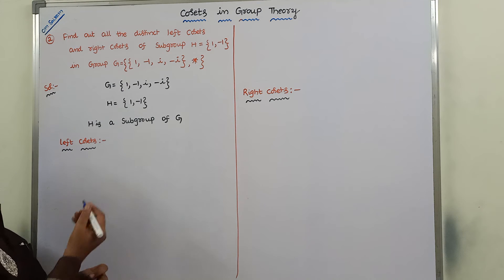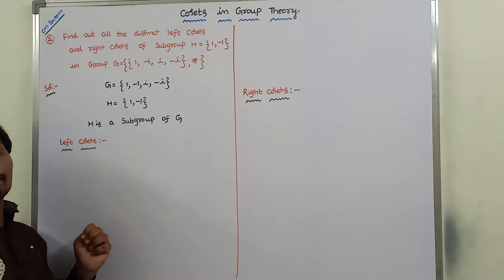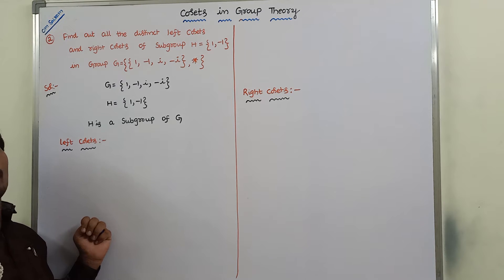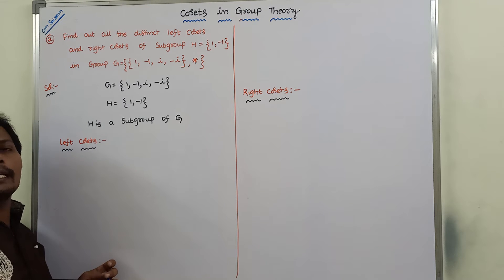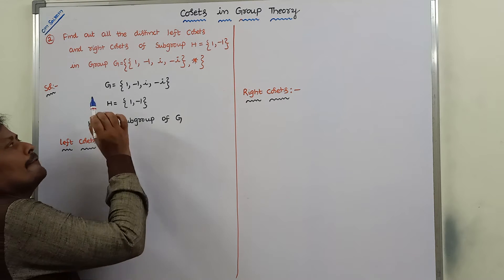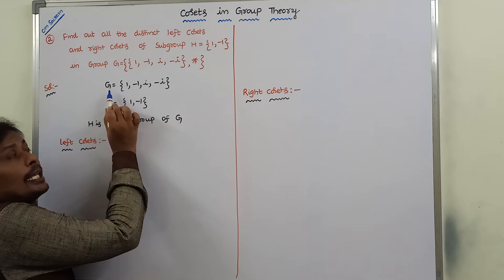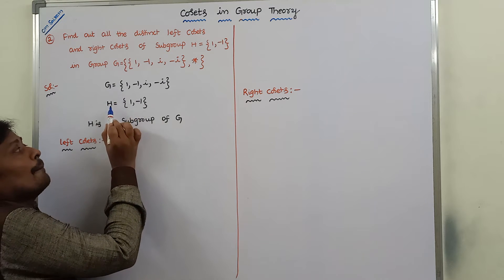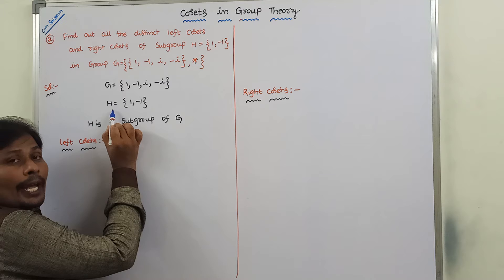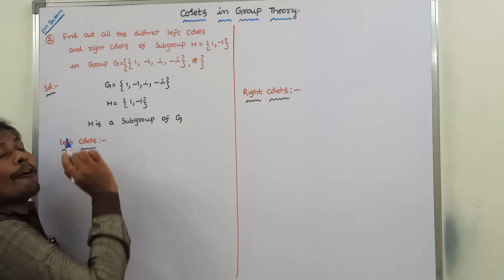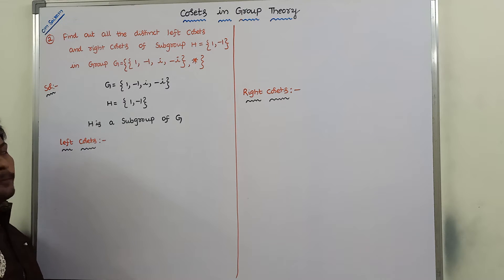Now we have to find out the left cosets and right cosets of H in group G. First, we have to calculate the left coset. Every element in G is combined with all the elements of H, and hence we can form the left coset.